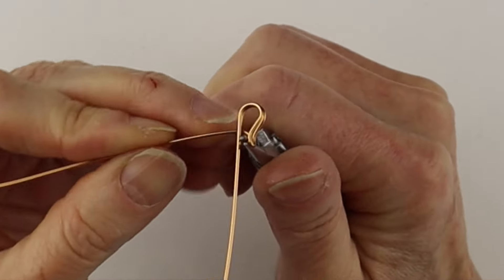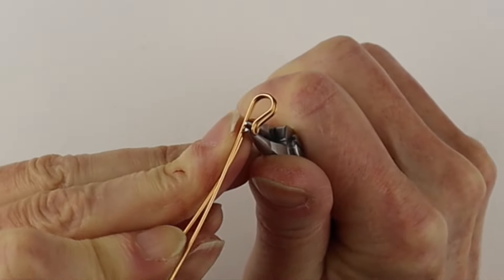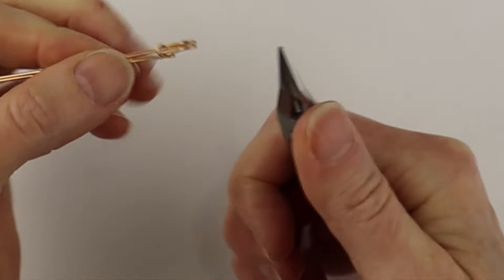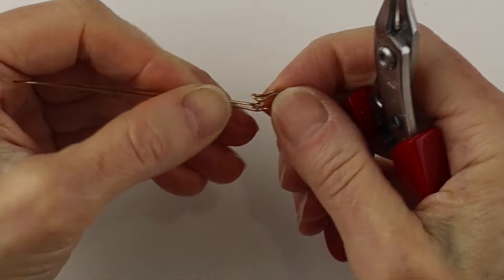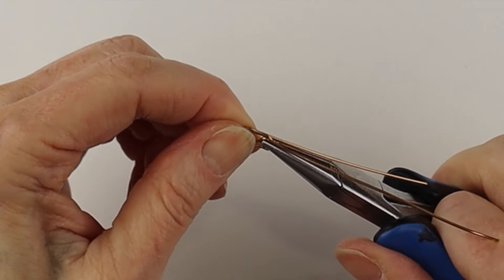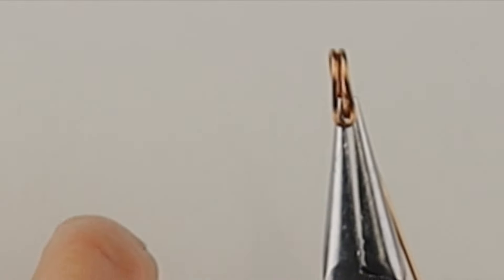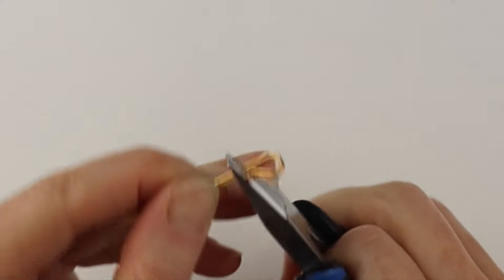Then we're going to flip this over and complete the loop. So we have a loop there. You can make it larger if you want. The idea is this loop is going to go in between these two wires.